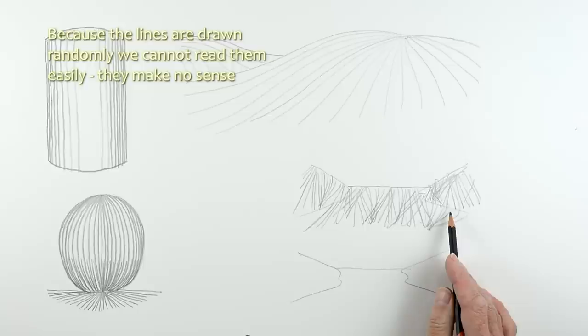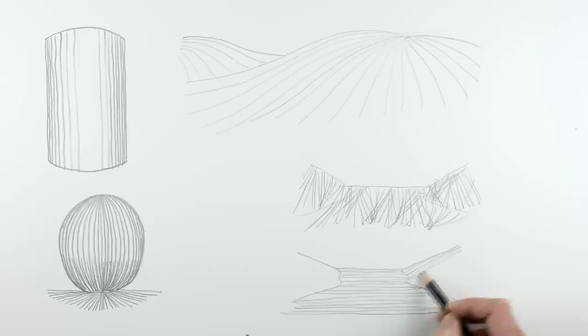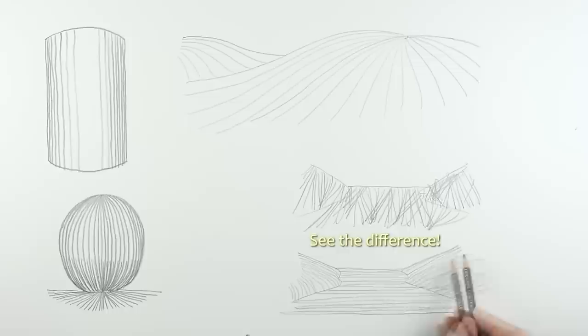But look what happens when I draw the lines in an organized fashion. These lines are all horizontal, which tells us the surface is now flat. These lines are all drawn at an angle, as you can see here, and it now looks as though we've got a flat road possibly going between two areas of land, or it could be a river going through. Do you see the idea? You see the difference? When the lines are organized, we can read the shape much better. So the angle of your lines is really important to your drawing. You must get the angles of the line right.